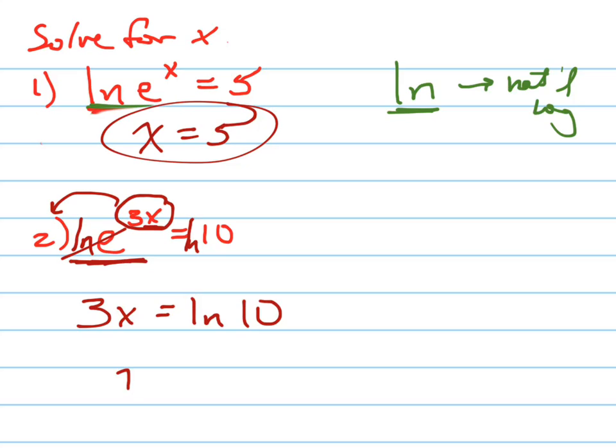And then x equals ln(10) over 3, which is just some number. You can either leave it like that if they want an exact form, or you could punch it in your calculator for a decimal approximation. What is ln(10)? Give me an estimate. Tell me what two integers it's between.